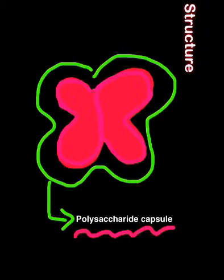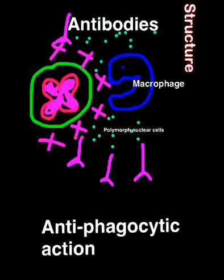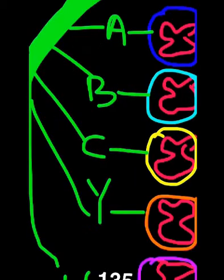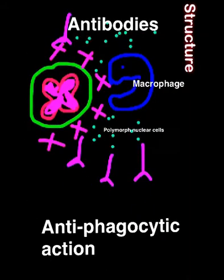The outermost layer is a polysaccharide capsule, which is responsible for the virulence of this organism. This is important because it provides antiphagocytic action, meaning that it cannot be destroyed by macrophages, polymorphonuclear cells, and even antibodies.